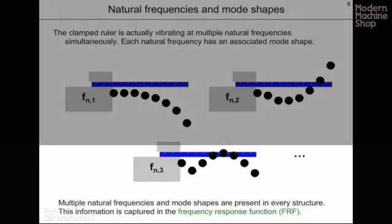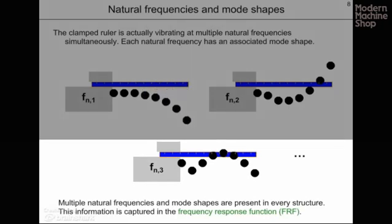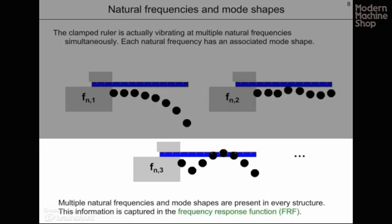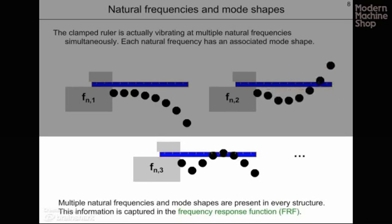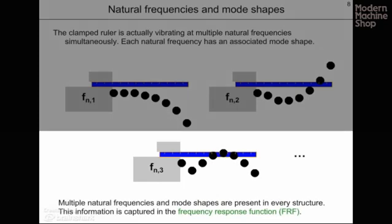In reality, our ruler is vibrating at multiple natural frequencies simultaneously, and each one of these natural frequencies has a particular shape associated with it, or mode shape. In the top left figure, we see the first natural frequency for this clamped ruler. In the top right figure, we see the second natural frequency with a different shape as it deflects. In the bottom figure, we see the third natural frequency and its corresponding mode shape. These multiple natural frequencies and mode shapes are present in every structure, including our tool, holder, spindle, machine combination, and this information is captured in frequency response functions.